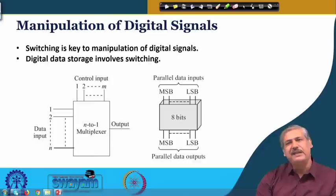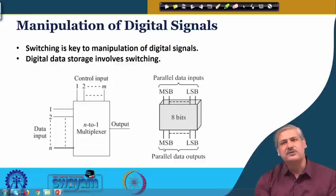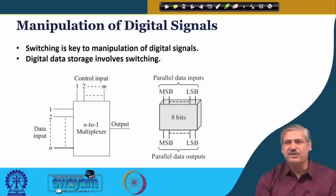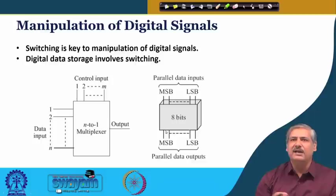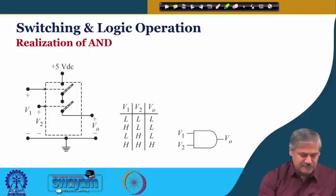The other thing is storage of data. An 8-bit data storage unit is made up of flip-flops — what flip-flops are we shall see later. There are parallel data inputs and parallel data outputs. When the data comes in is decided by specific logic, and how data is stored also involves switching activity happening inside the circuit. This is one of the core aspects of digital processing and manipulation when you look at it at the circuit level.